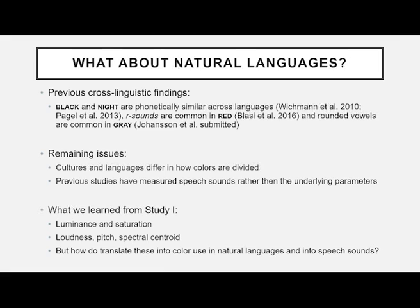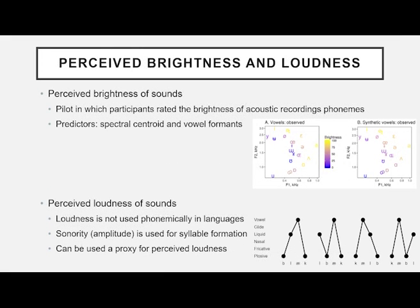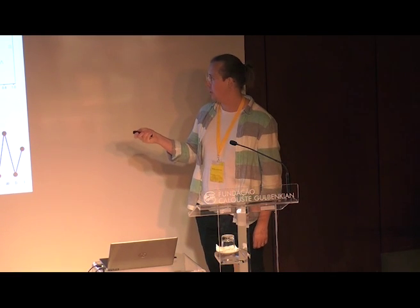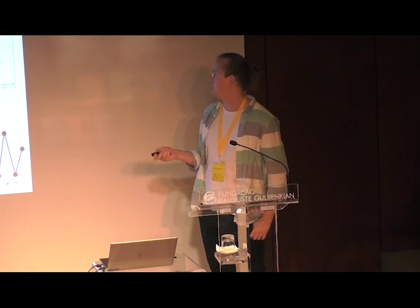From Study 1, we know that luminance and saturation seem important, as well as loudness, pitch, and spectral centroid. The problem is we don't really know what these correspond to in speech sounds in all cases. Because luminance was so important, we wanted to see what bright sounds sound like. So we did a small pilot where we got people to rank acoustic recordings of phonemes in terms of brightness, and found that spectral centroid and vowel formants were important for this.